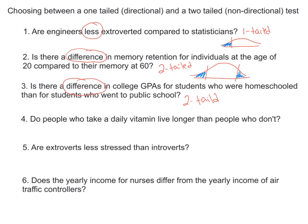Number four: Do people who take daily vitamins live longer than people who don't? 'Longer' is our key word there, because in the distribution, what we're looking for is do they score more so than the general population way over here for age — do they live longer than those people who don't? So in this case it would be a one-tailed test, meaning you're just looking at one tail. This becomes very important when we start talking about running statistical analysis.